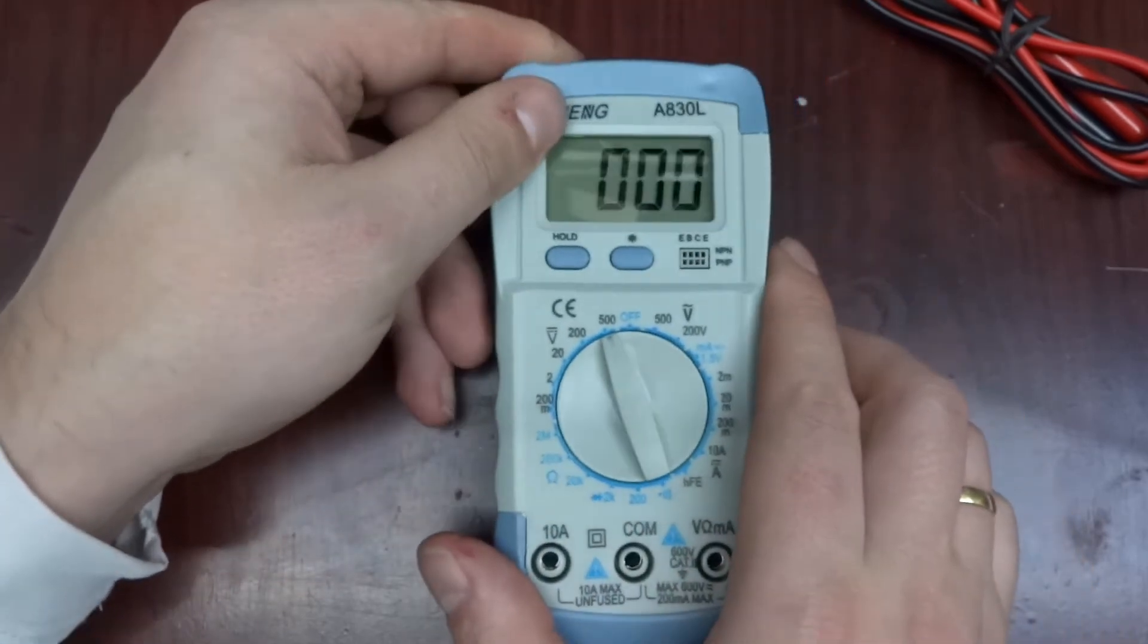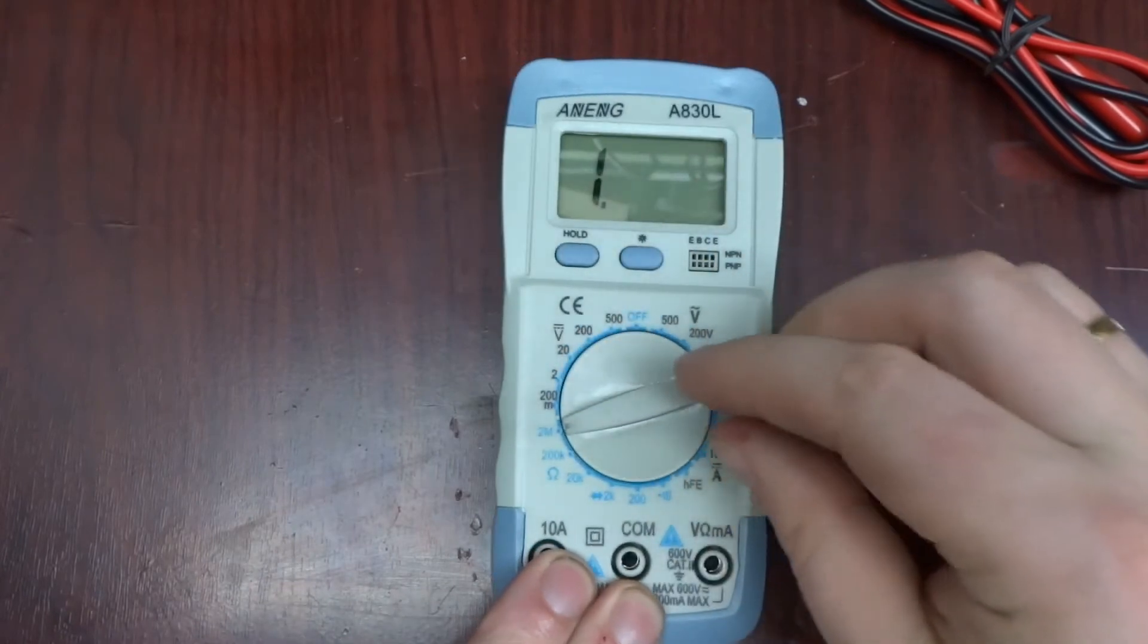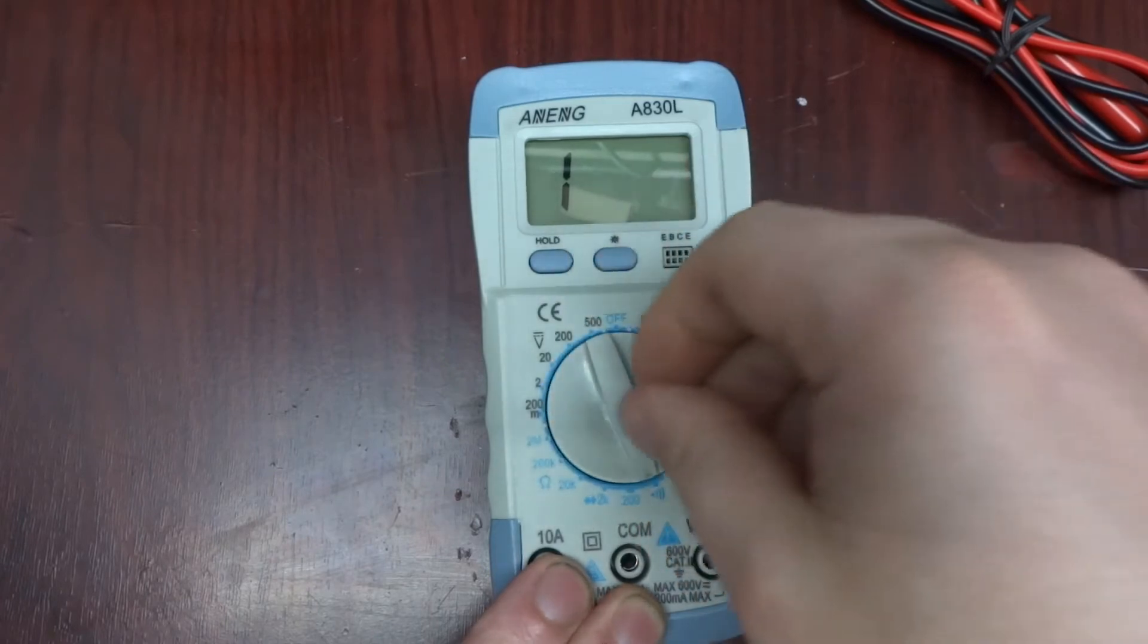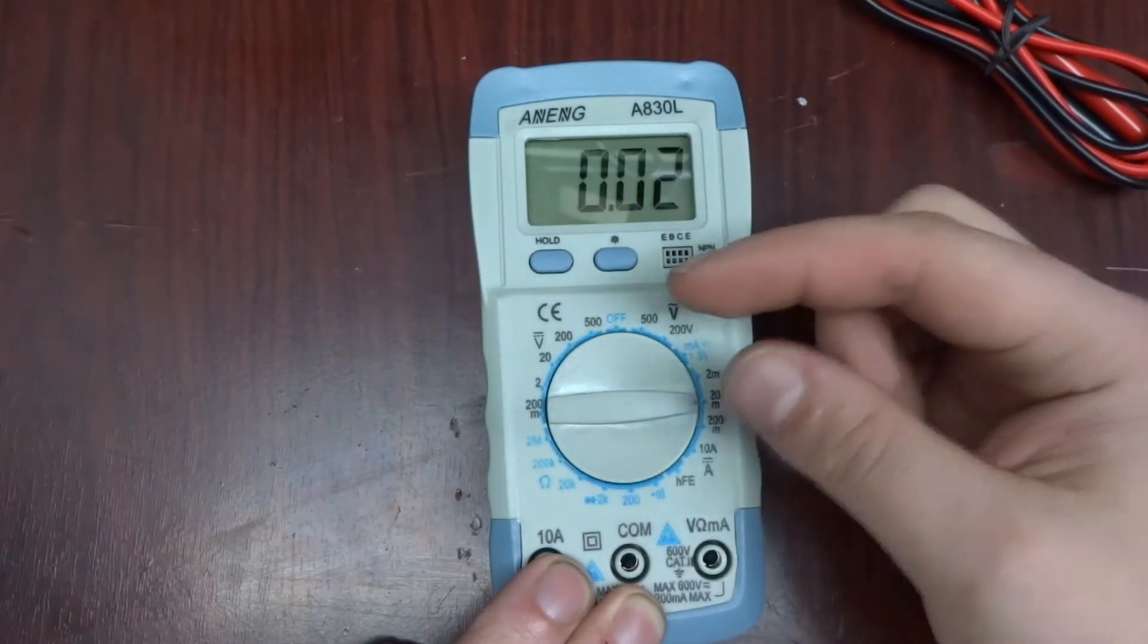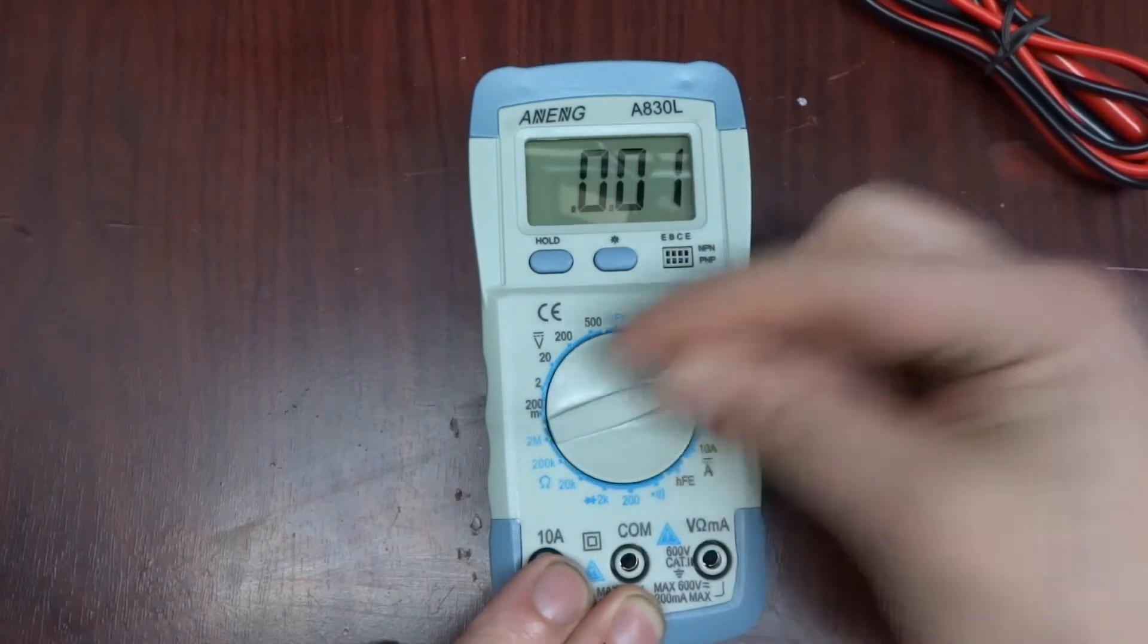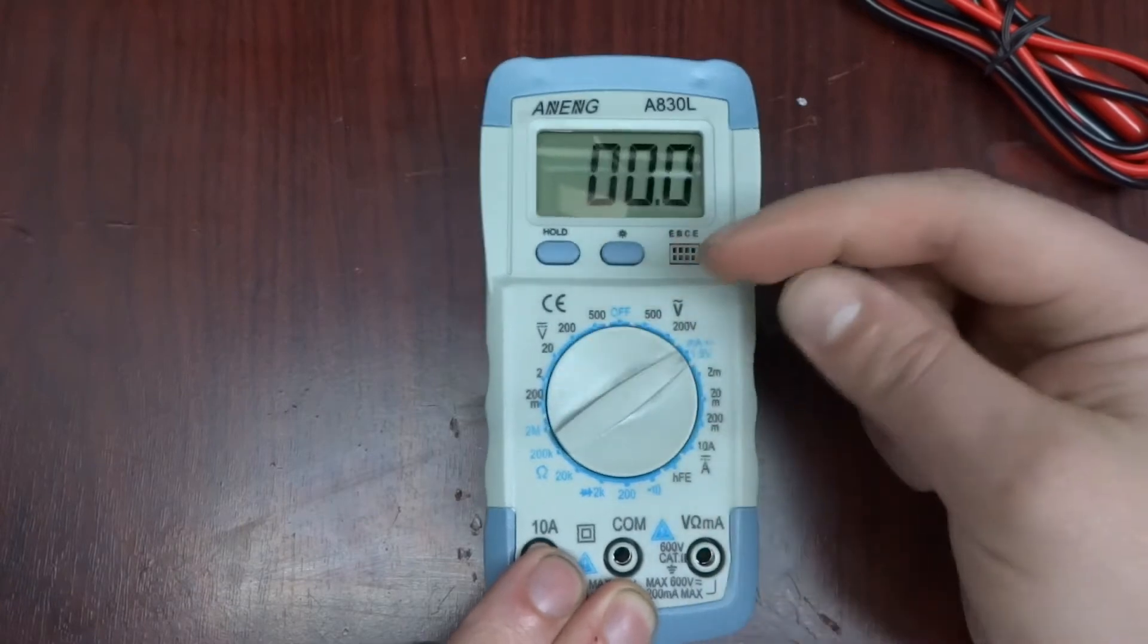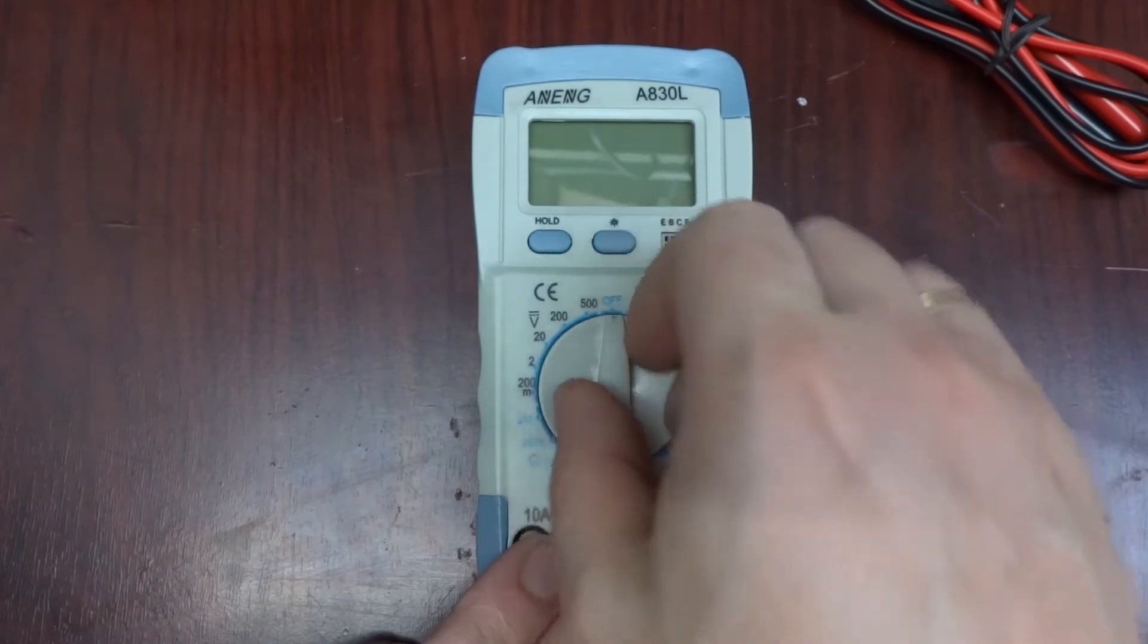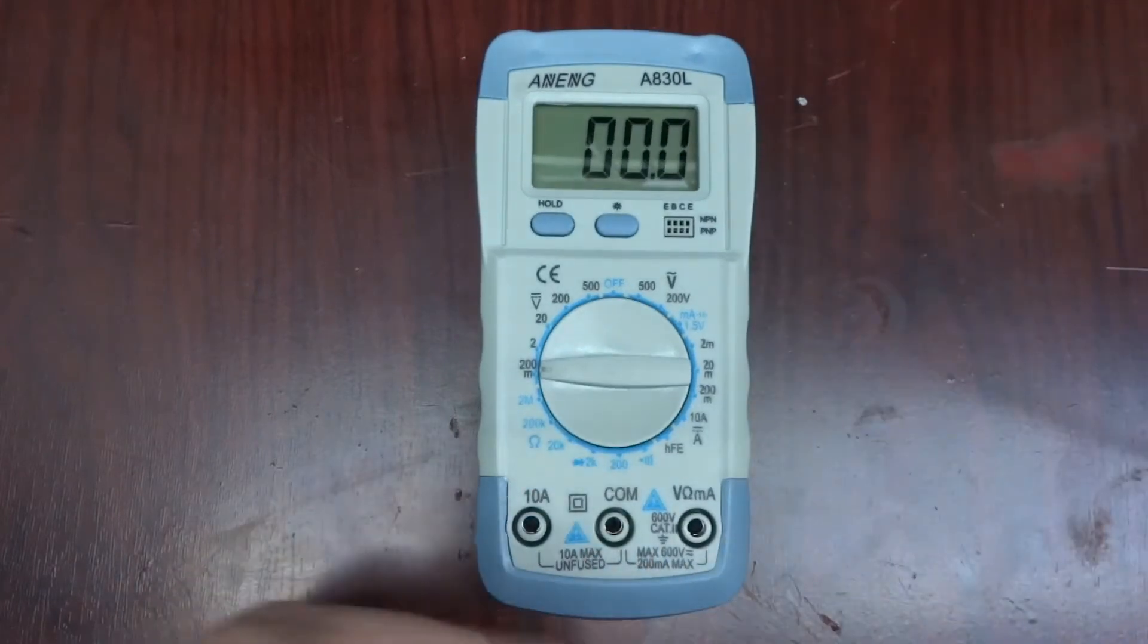We've got something on the screen, amazing. We're in the volts range, ohms, diode. Let's plug the leads in.